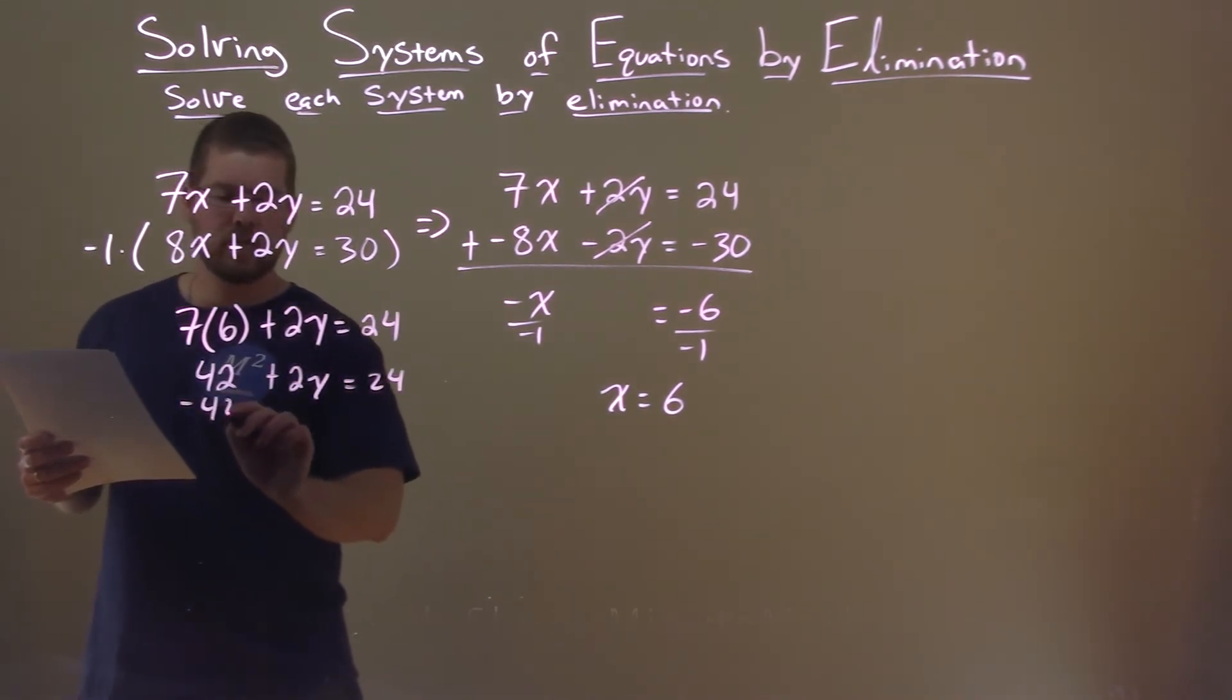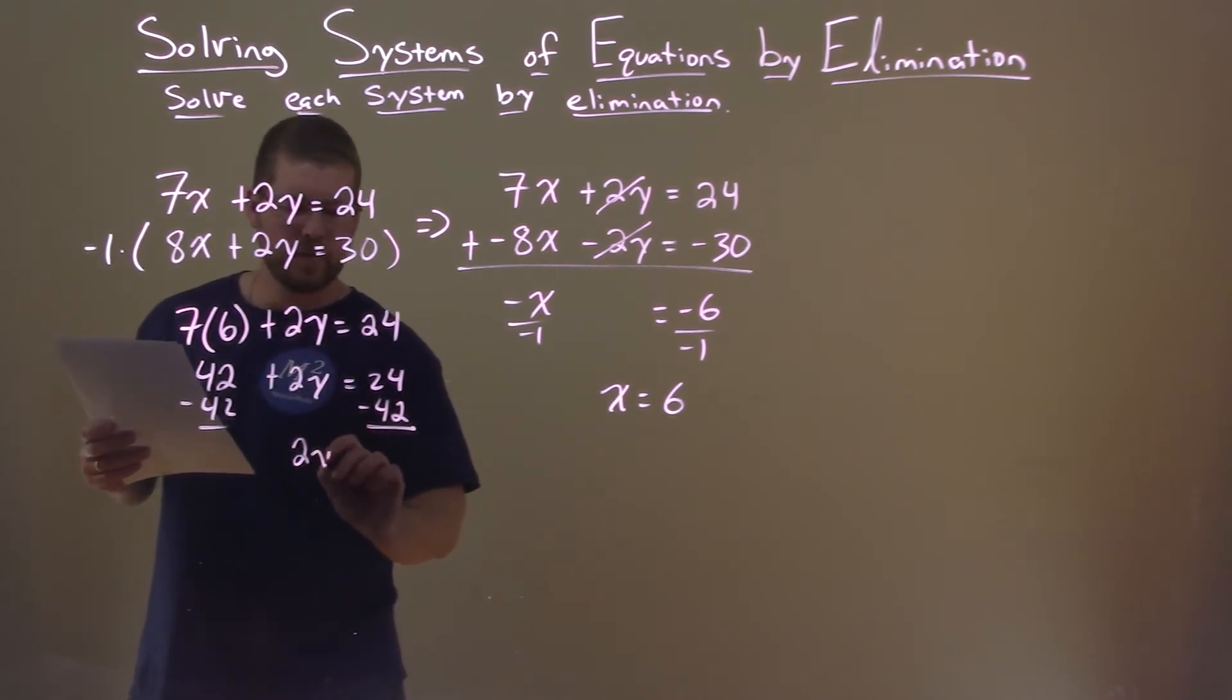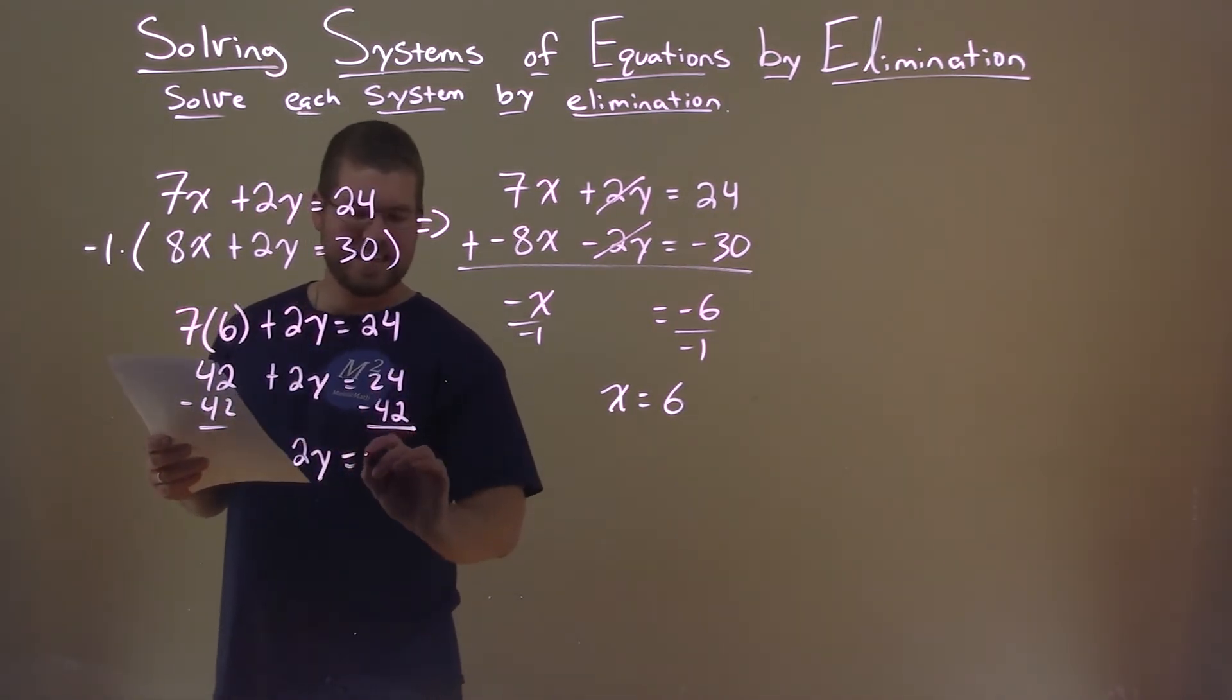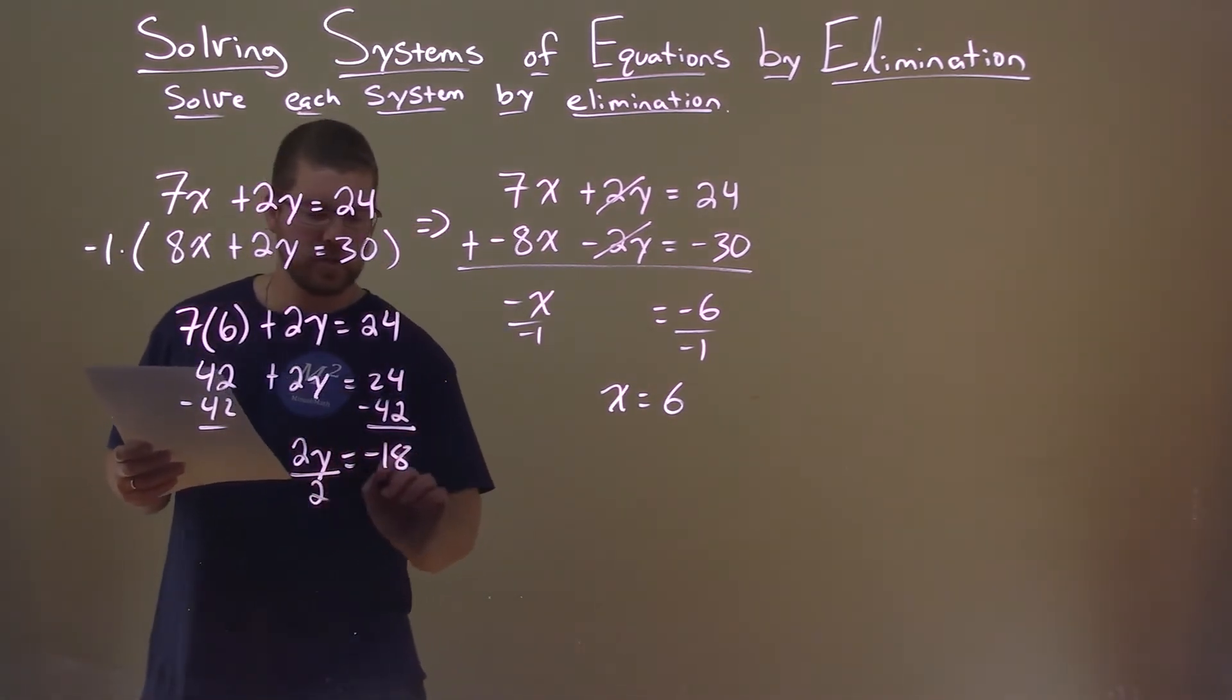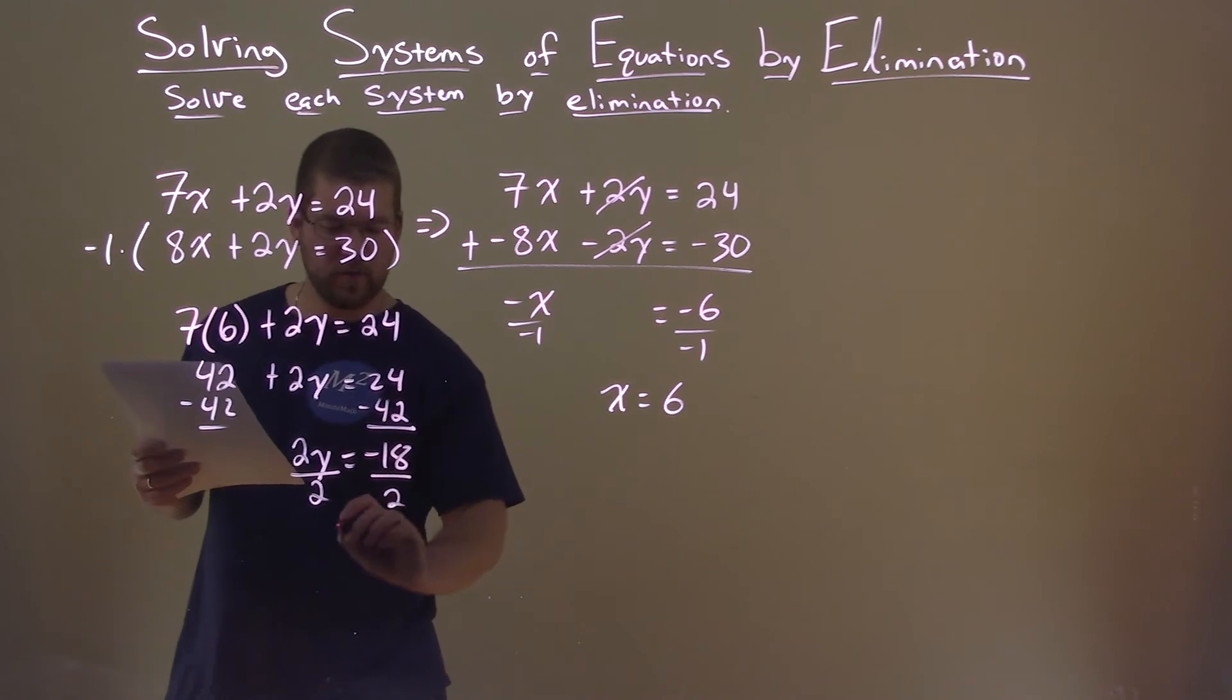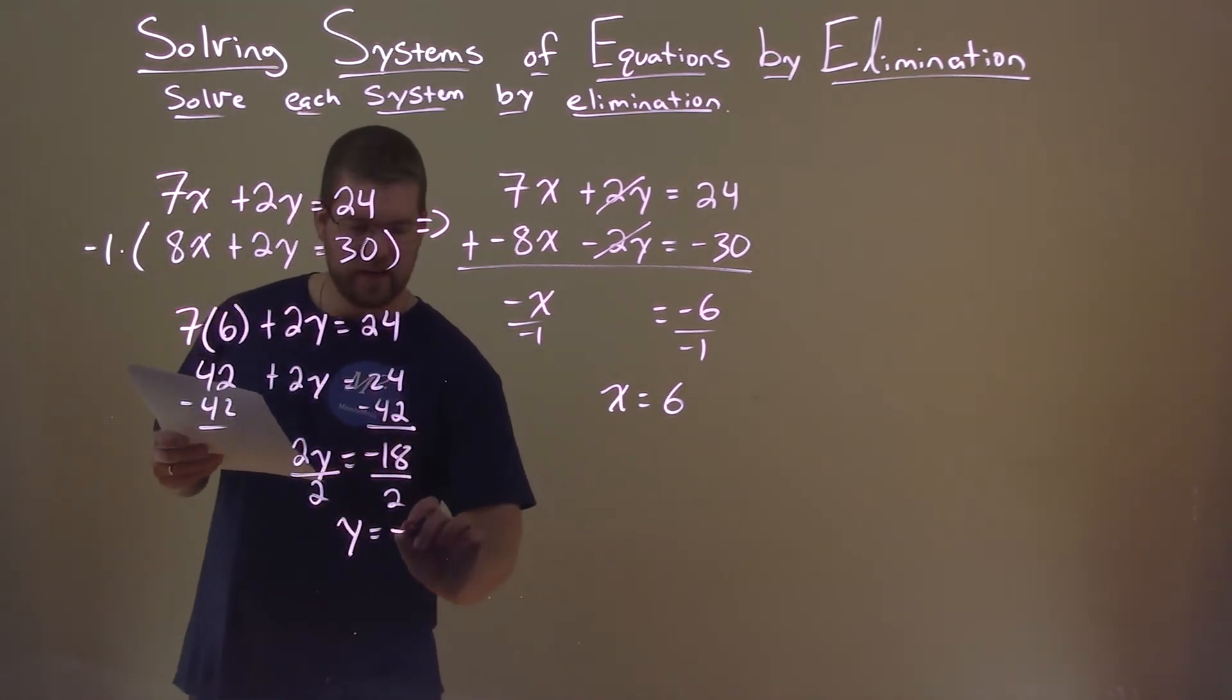Subtract 42 from both sides. 2y equals 24 minus 42, which is -18. Now divide both sides by 2 to get y by itself. Y equals -18 divided by 2, which is -9.